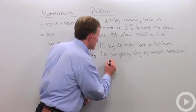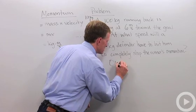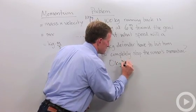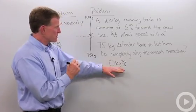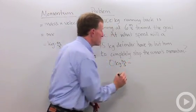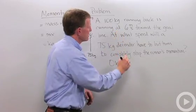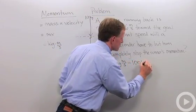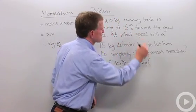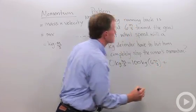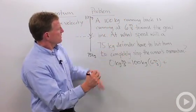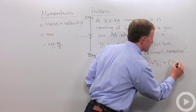So we want to get zero kilograms times meters squared. That's zero momentum, and that's going to equal our running back, 100 kilograms, and his velocity is 6 meters per second, plus our defender, which is 75 kilograms.